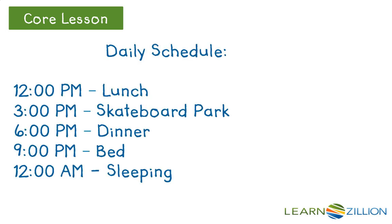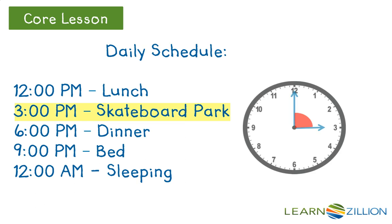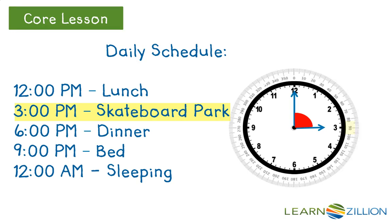Let's look at the schedule again. At 3 o'clock, the hour hand is pointing to the 3, while the minute hand is vertical, pointing to the 12. As that minute hand rotated, it formed an angle shown here in red. To measure that opening, I need to think about how much of a circle that minute hand, or ray, has rotated. It hasn't made a full or even half rotation, so it has to be less than 180 degrees.